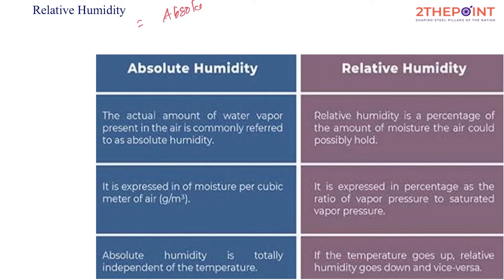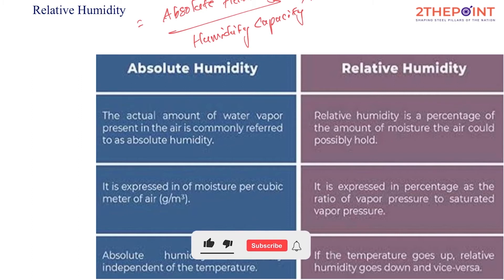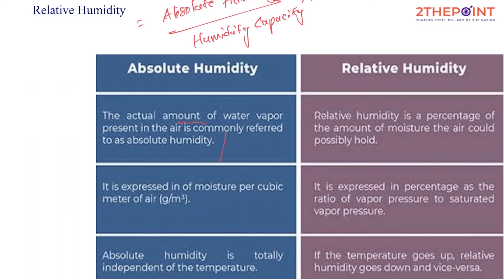Relative humidity is simply absolute humidity divided by humidity capacity, multiplied by 100. The actual amount of water vapour present in the air is referred to as absolute humidity. The amount of water vapour present per unit volume of air is absolute humidity. Relative humidity is expressed as a percentage. Absolute humidity is expressed as moisture per cubic meter and is independent of temperature, whereas humidity capacity changes with temperature.